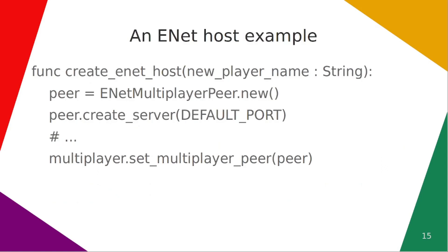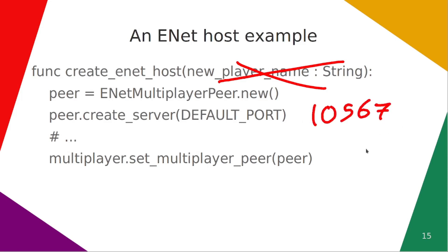Here's an example of how to create a host with Enet taken from our program. Create Enet host takes a little bit of utility information — in this case the player name, but don't worry about that if you're just trying to understand how to create a peer. The first thing we do is set our peer, which is a Multiplayer Peer superclass, to an Enet Multiplayer Peer. Then we call create_server with the default port, currently set to 10567 — it can be anything, just make sure no other program on your machine is using the same port. After some housekeeping work, we call Multiplayer.set_multiplayer_peer to this peer, so it knows that it is the one we are using. You can have multiple active peers at the same time, but you can only use one.